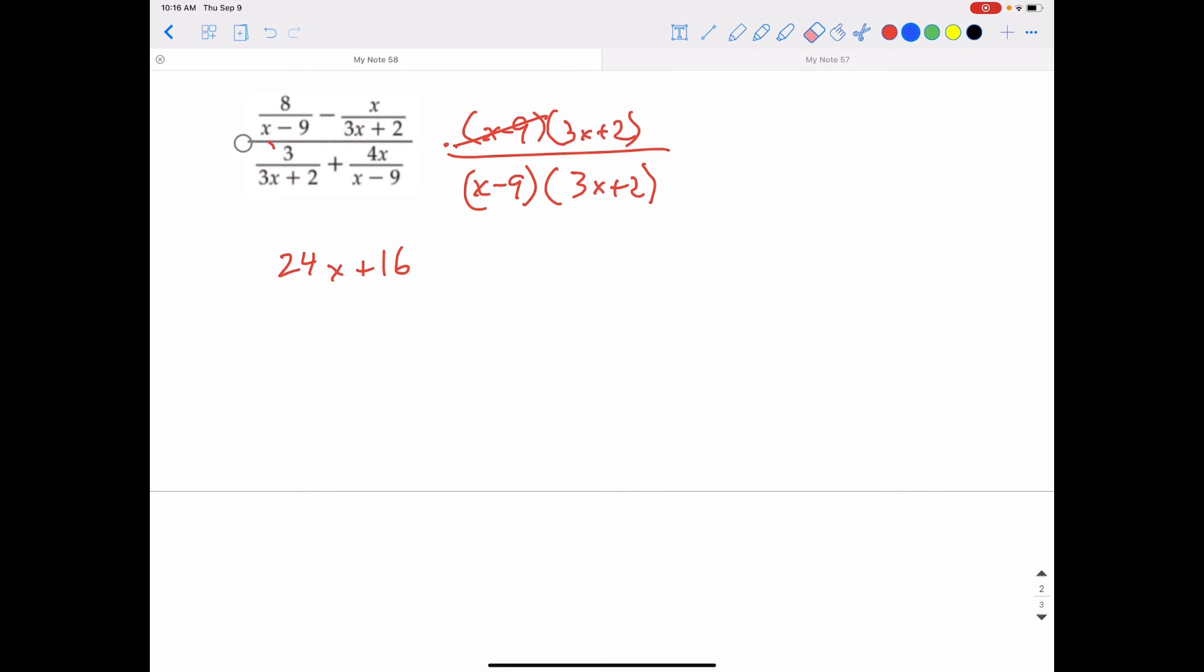Now, I also have to multiply the x over 3x plus 2 times that same common denominator. So, this time, the 3x plus 2s cancel. And I'm left with negative x, that is a negative x right there, times x minus 9, which will be negative x squared. And negative x times negative 9 is positive 9x.